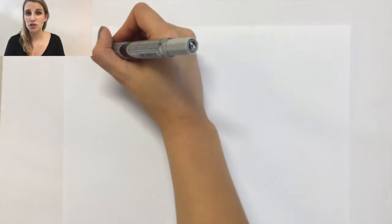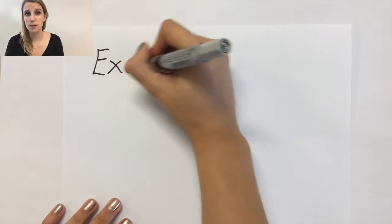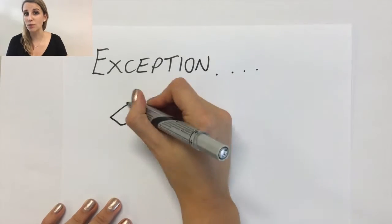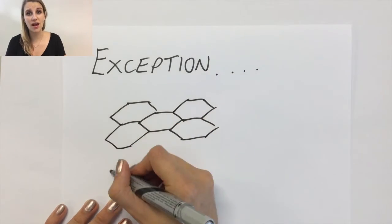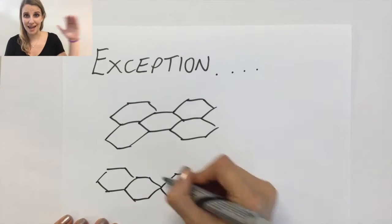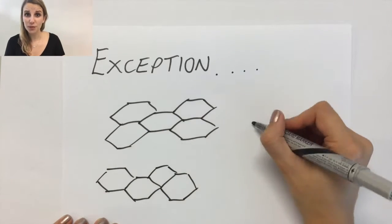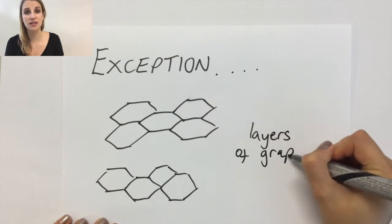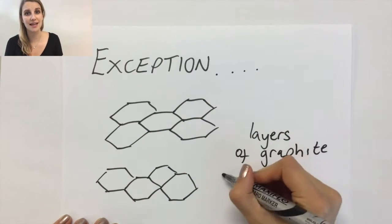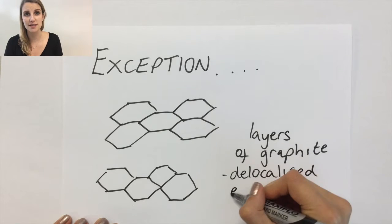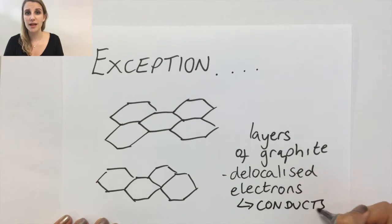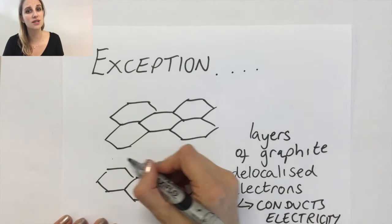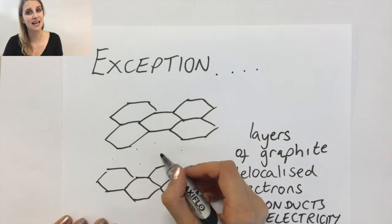The one exception to this rule is a substance called graphite. It's a giant covalent structure arranged in layers, and it has delocalized electrons between those layers that can travel through them. That means they can act as charge carriers and cause it to conduct electricity.